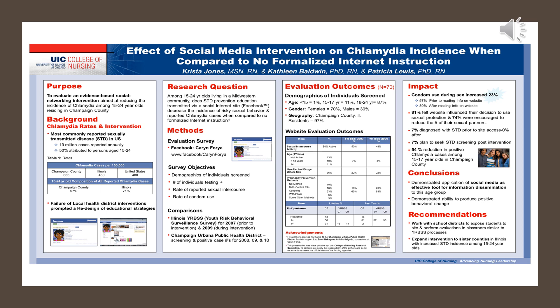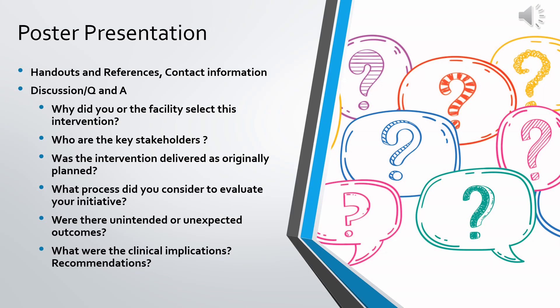In the sample poster, the first column describes the problem, background, statistics, and information about the location such as county or clinical agency. The second column states the clinical question, methods, and measures used to evaluate the impact. The third column details the results or evaluation of outcomes. The final column highlights nursing, patient care, or public health implications, as well as recommendations and the conclusion.